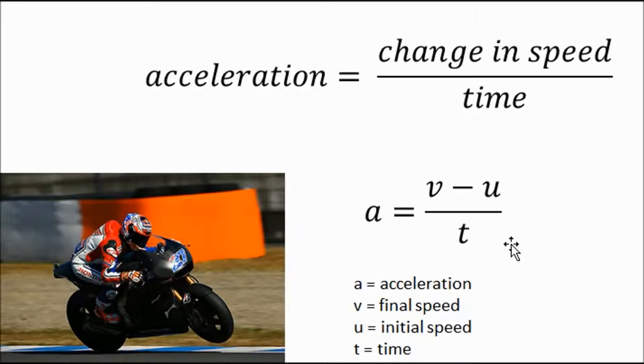So if you said my car does 0 to 100 in 10 seconds, then the 0 to 100, that's V, your final speed, was 100. U, your initial speed, was 0, and your time was 10 seconds.